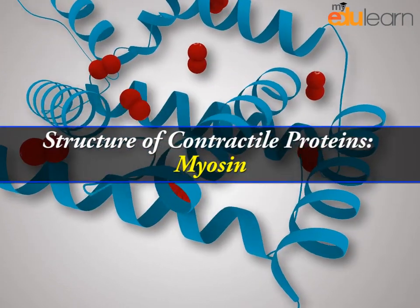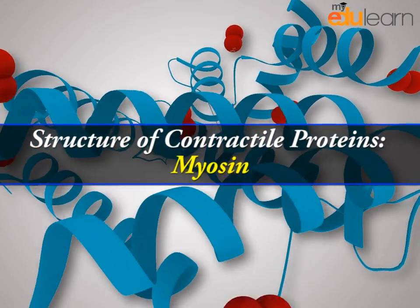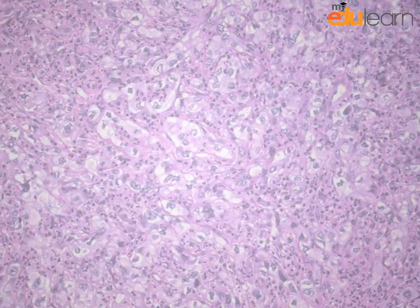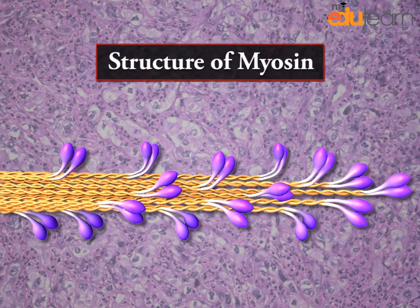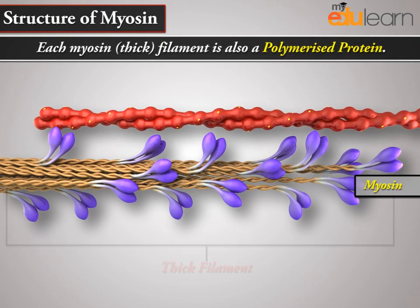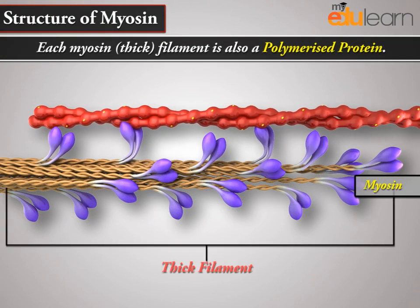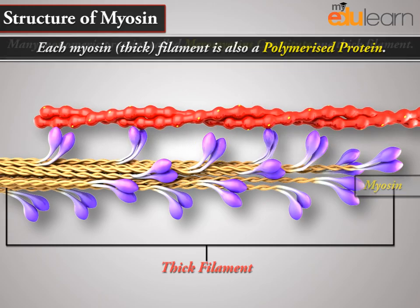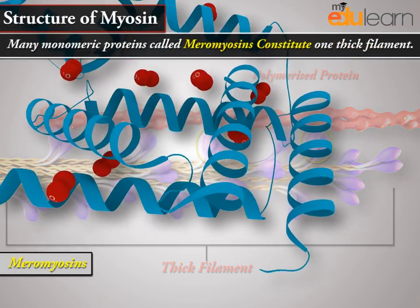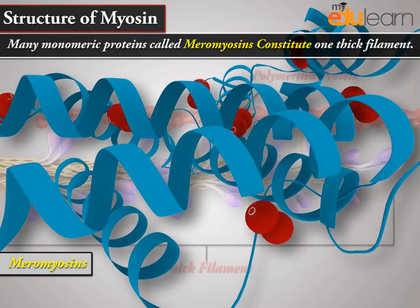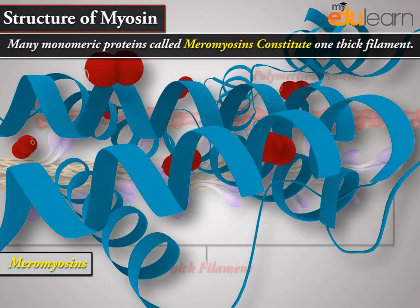Let us now see the structure of myosin. Each myosin thick filament is also a polymerized protein. Many monomeric proteins called meromyosins constitute one thick filament.